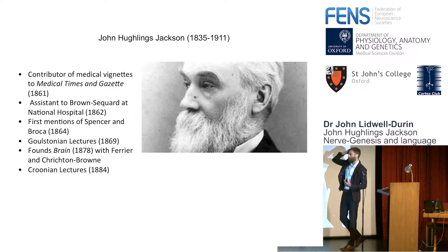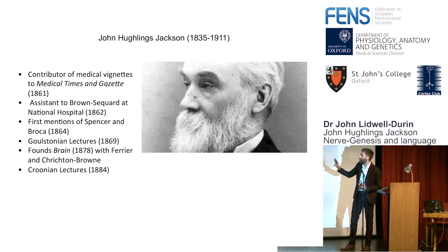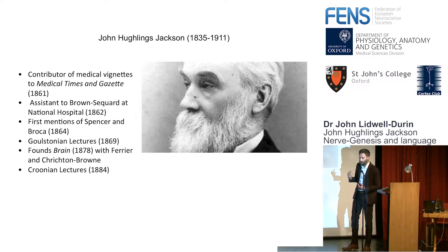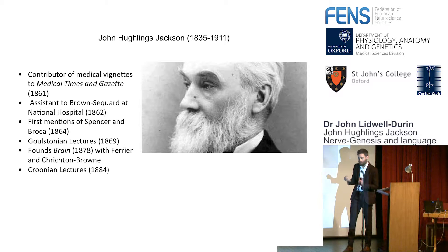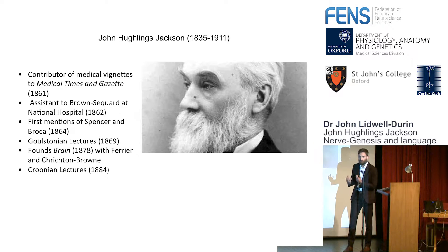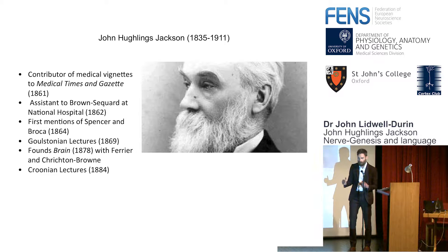As you see, one of Hughlings Jackson's first roles within the scientific community — he was a writer of medical vignettes for the Medical Times and Gazette. Hughlings Jackson is a very prominent figure, but the type of evidence he uses to give his theory of how the nervous system evolved is linguistic. He is working with epileptics, he is working with people committed to asylums, and it's out of his meetings with these patients that he feels he finds the true evidence of how the nervous system has evolved.